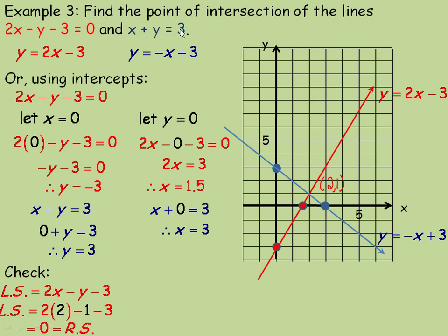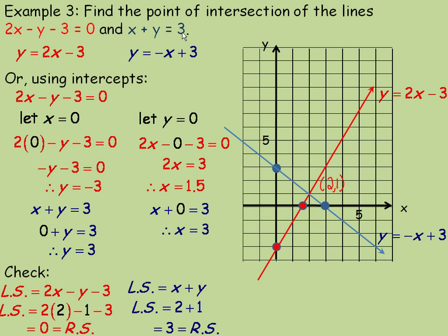Now let's check in x plus y equals 3. The left side expression is x plus y. Putting 2 in place of x and 1 in place of y: 2 plus 1 equals 3, which equals the right side of the equation. So the point is verified there as well. The point of intersection is (2, 1).